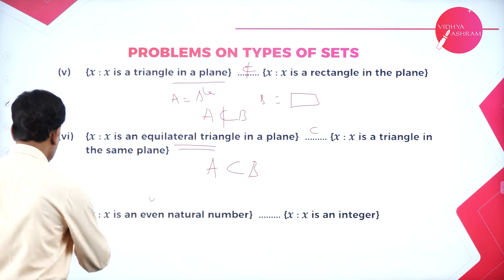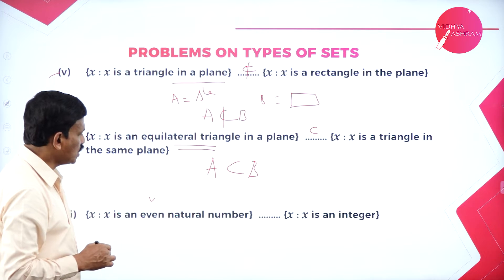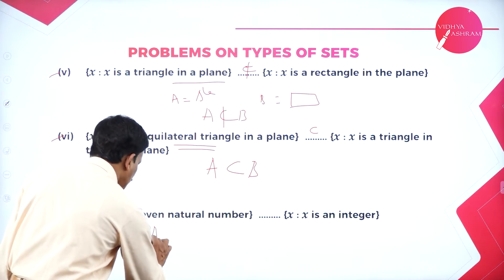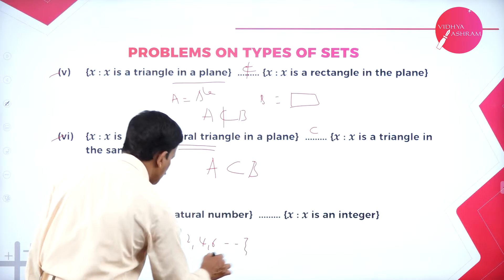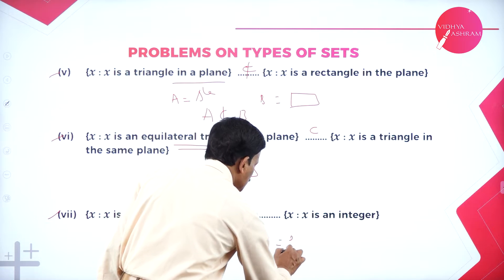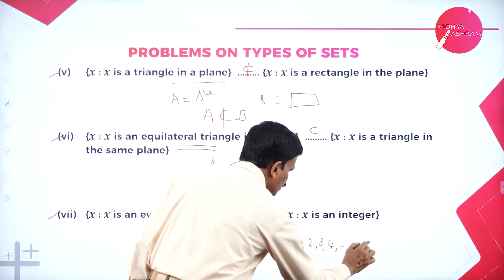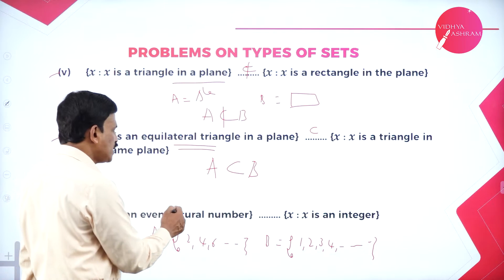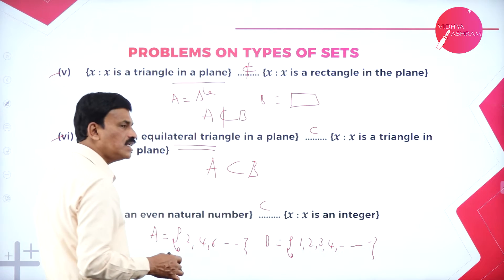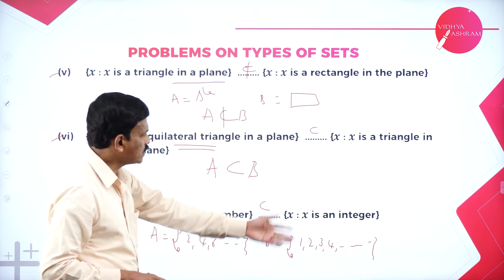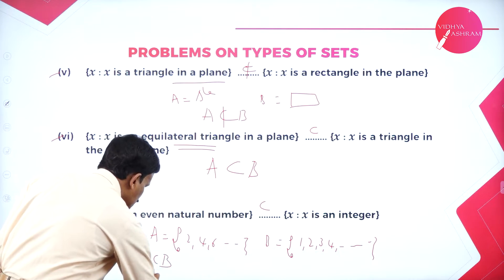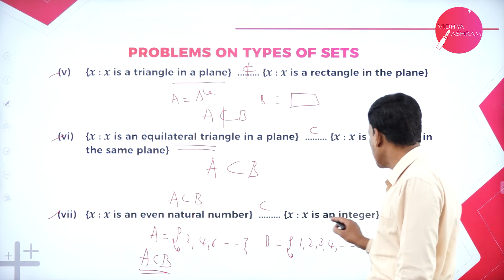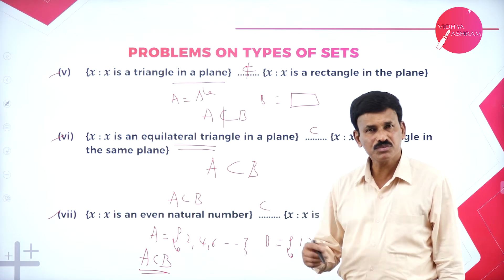Now examine whether the following statements are true or false. First: A = {a, b} and B = {b, c, a}. The statement is 'A ⊄ B.' Since all elements of A are in B, A ⊆ B — so the given statement is false. Second: {a, e} ⊆ {x : x is a vowel in the English alphabet}. Vowels are A, E, I, O, U, so {a, e} ⊆ B — this statement is true.